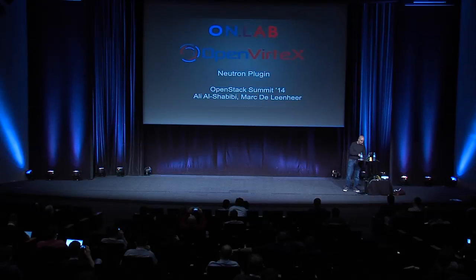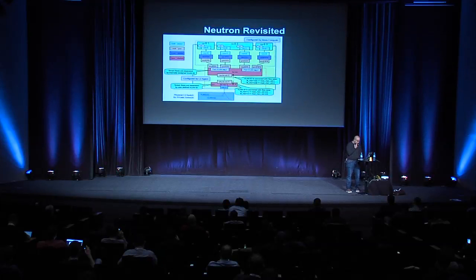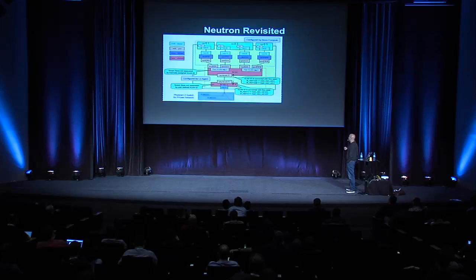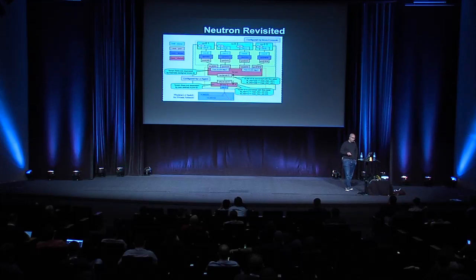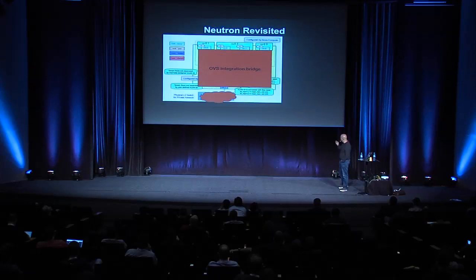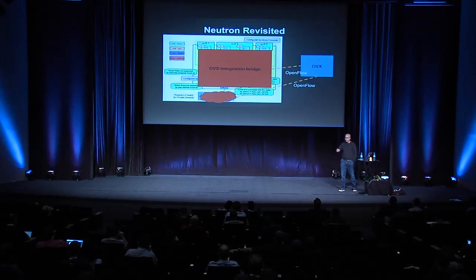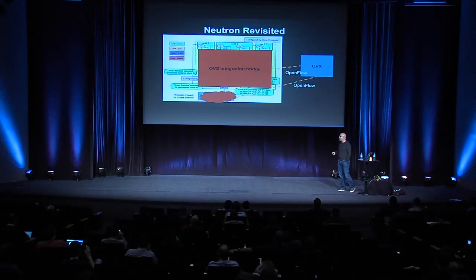Let's check out what we do in OpenStack. You probably know this diagram — but we think it's far too complicated. There are far too many bridges, too many moving parts, and it's just a nightmare to maintain. So what we've done is replace all of this with a single OVS integration bridge which connects to OVX, and then you implement the policy of your network in the network operating systems on top of OVX.